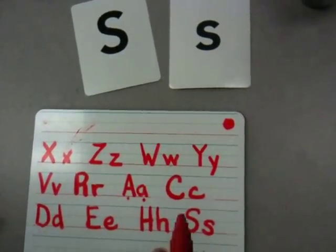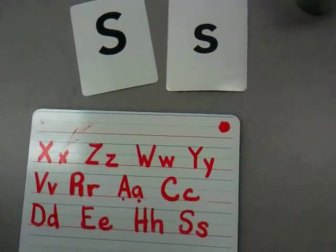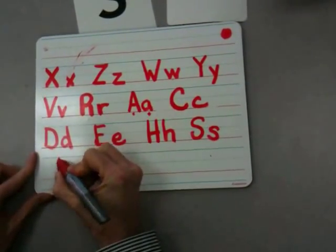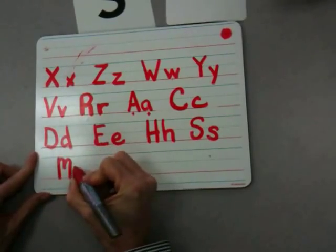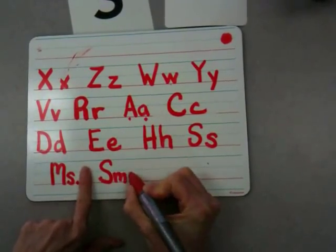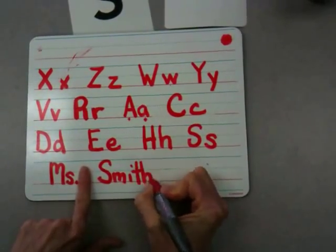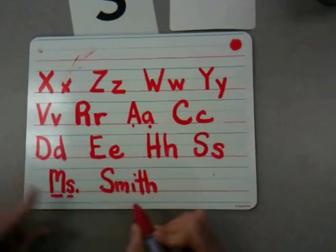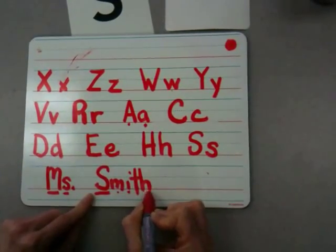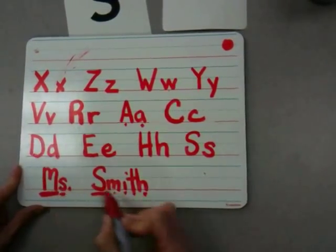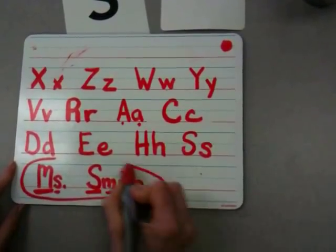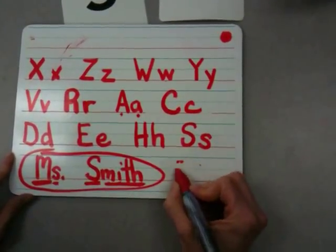Now I want you to write your name using your upper and lowercase letters. For example, I'll write my name — Miss Smith. I have an uppercase M and a lowercase S, uppercase S, M-I-T-H. So notice I have a big letter and a little letter and a big letter and then little letters. That's how you use upper and lowercase.